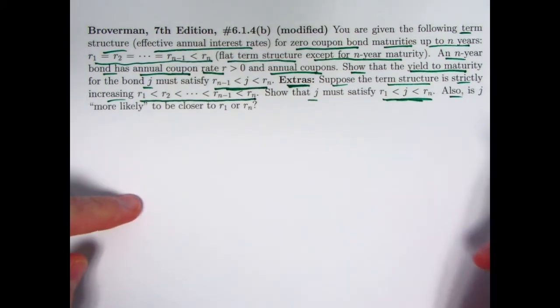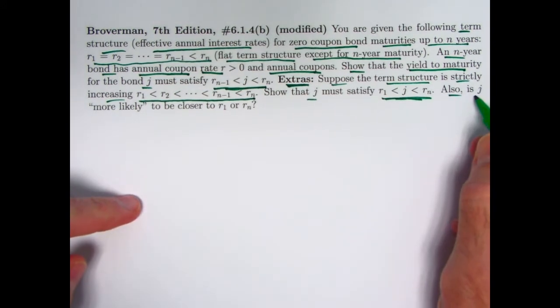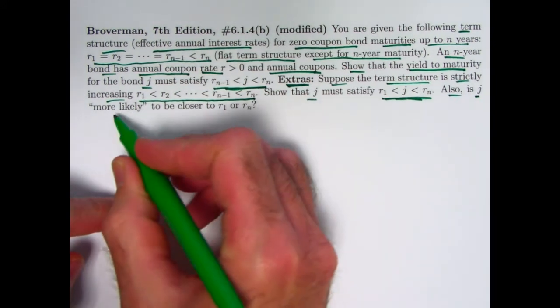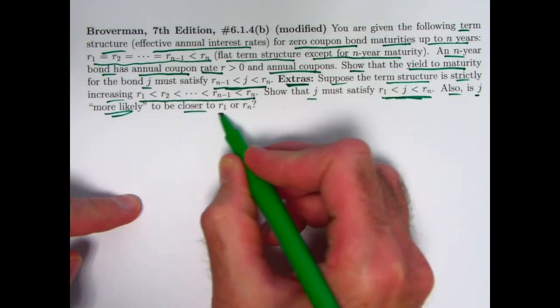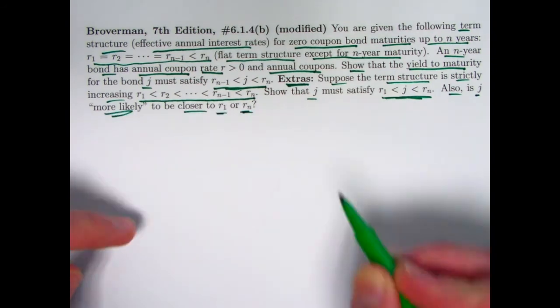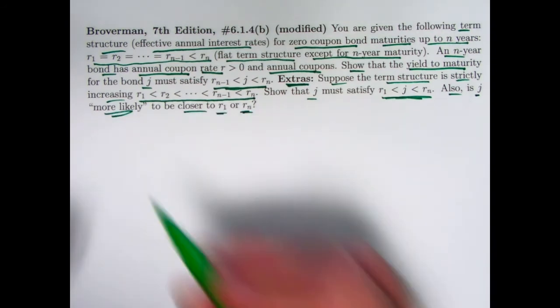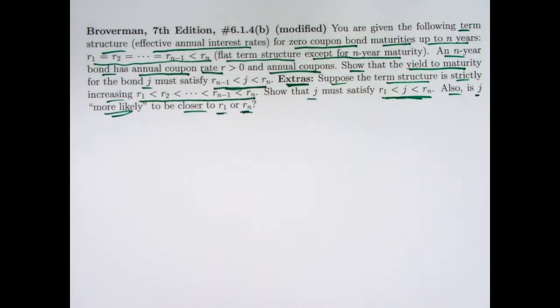Also, in this case, we might consider: is j more likely to be closer to r_1 or r_n? I'm being purposely vague there about what 'more likely' might mean. We'll be thinking intuitively at that point.